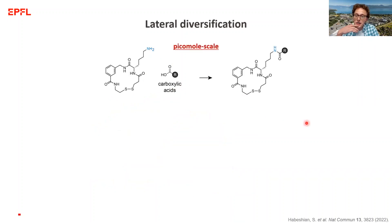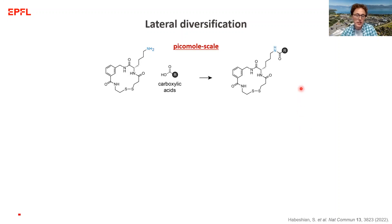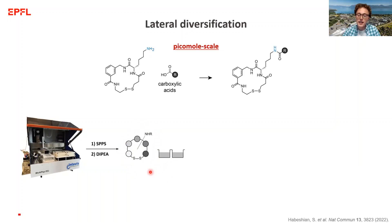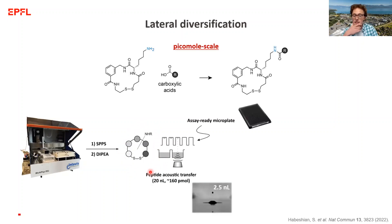The second important difference with this solution-phase step is that because we're using things in solution, we can change the scale simply by transferring different volumes — we have complete control over the scale. As Alex mentioned, this is our disulfide macrocycle stock of peptide in DMSO on a plate, and we then use an Echo liquid handler to transfer exactly the volume and amount of peptide we want.